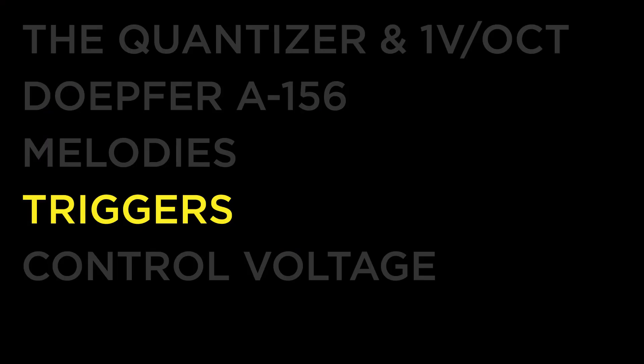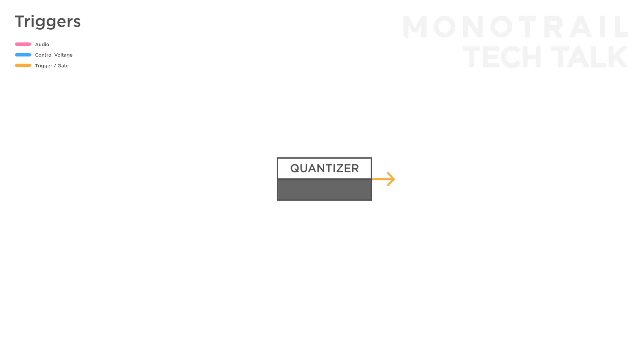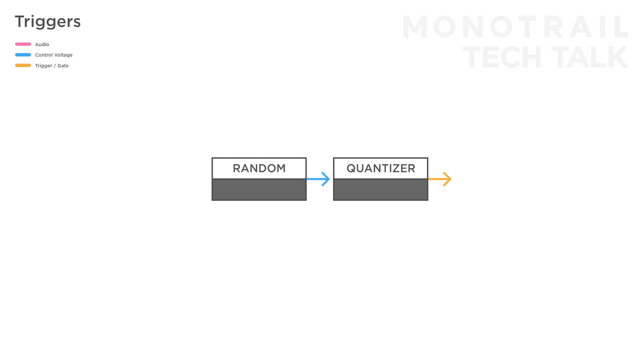Have a look at these videos if you'd like a full walkthrough of a patch I used in similar performances. Besides creating melodies, I quickly want to mention some other tricks as well, starting with triggers. Because the A156 offers a trigger in and output, you can experiment with those even if you're not interested in melodies. For example, a simple slow random voltage into the CV input will result in an outgoing trigger whenever the voltage changes enough — now the quantizer functions as a random trigger generator.